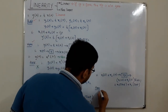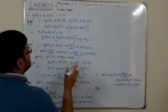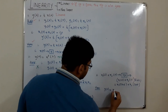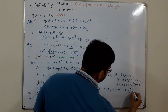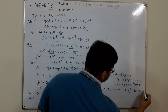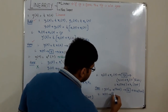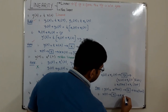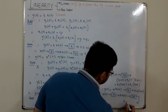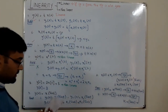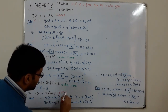Now check homogeneity for y(t) = x(sin t). Step one: output y(t) = x(sin t); scaled output is k·x(sin t). Step two: scale input first to get k·x(t), feed to system — output is k·x(sin t). These are equal, so homogeneity is also satisfied. Therefore this system is linear.